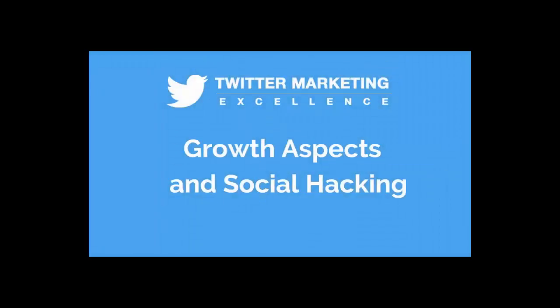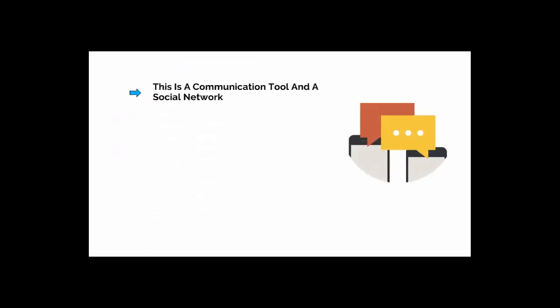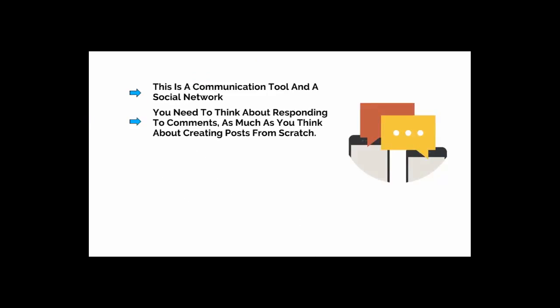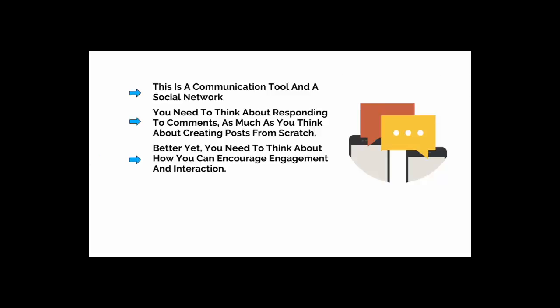You might think we've covered an awful lot of what makes Twitter tick at this point, but you're still missing out on something pretty important: the social aspect. So far, we've only discussed creating content and putting things out there. But of course, Twitter isn't just about output — it's about input, too. This is a communication tool and a social network. In other words, you need to think about responding to comments as much as you think about creating posts from scratch. Better yet, you need to think about how you can encourage engagement and interaction.